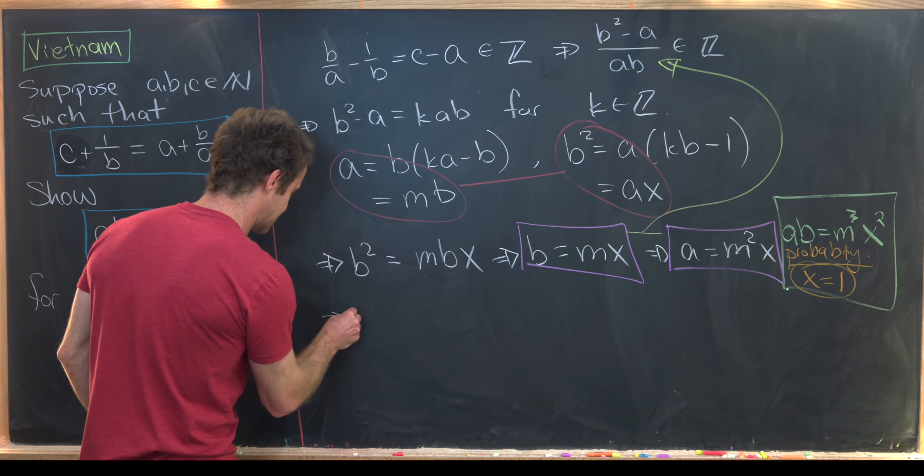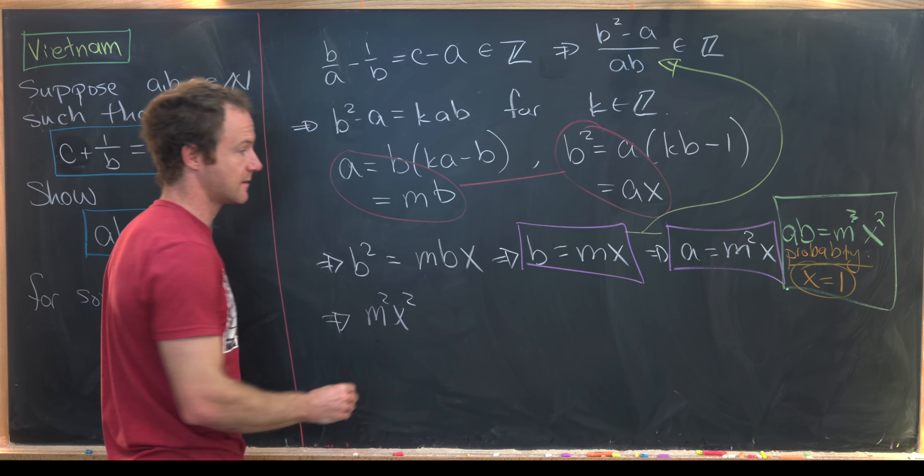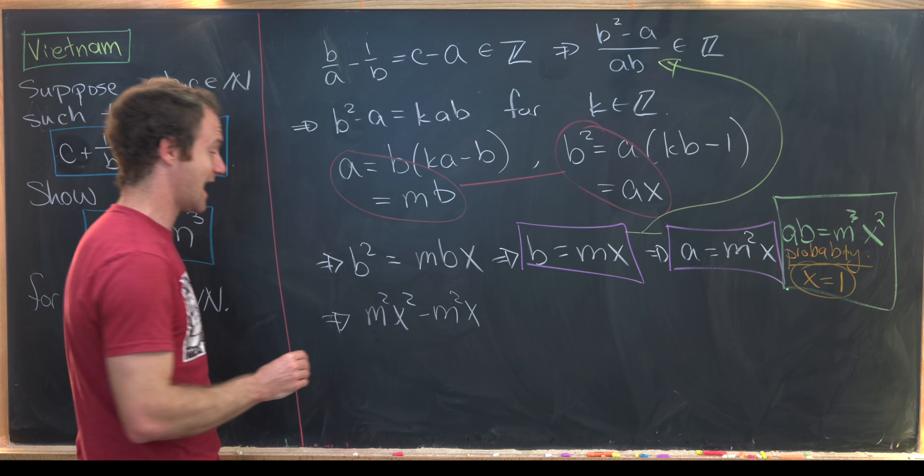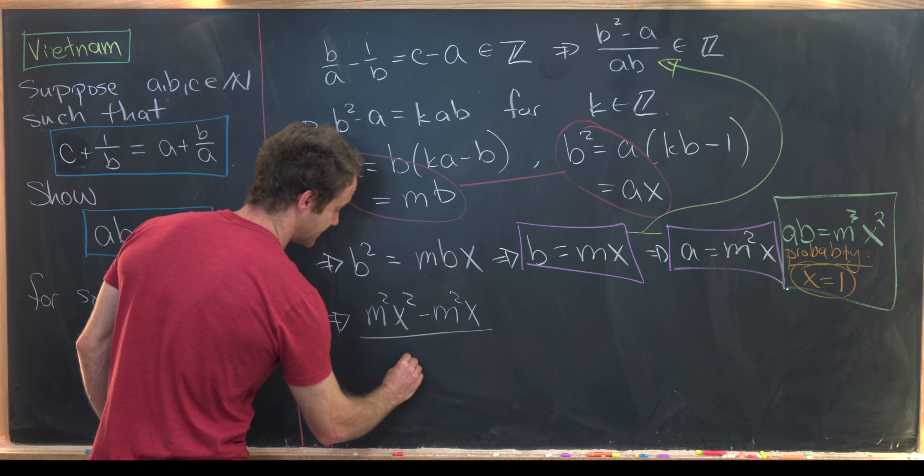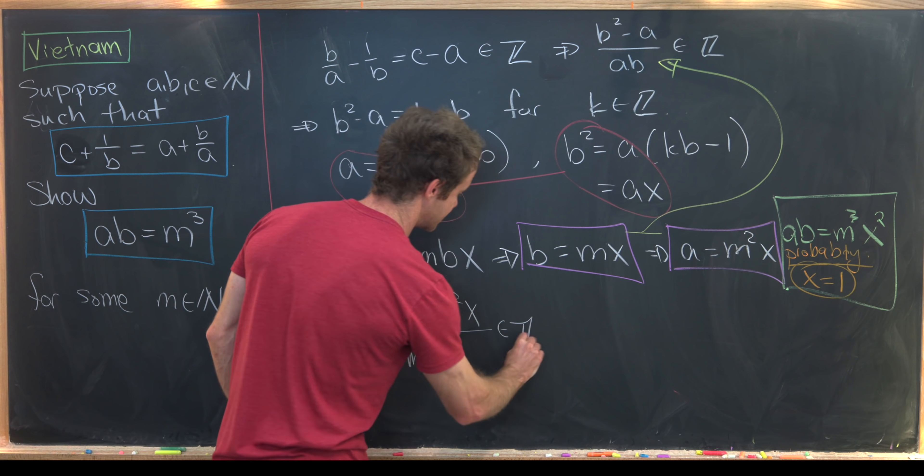So what we'll do is take these two purple boxed equations and plug them in to one of our original observations, which was B squared minus A over AB is an integer. So let's see, that's going to tell us that M squared X squared, notice that's B squared minus M squared X, notice that is A, over A times B, which was M cubed X squared is an integer.